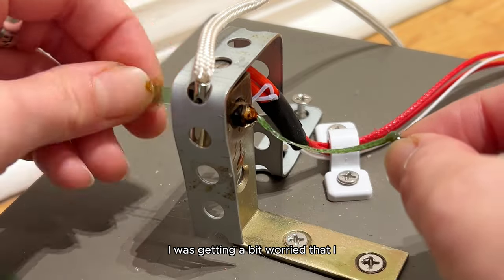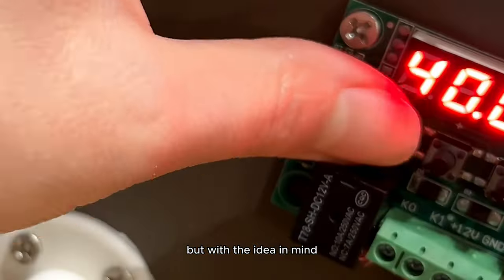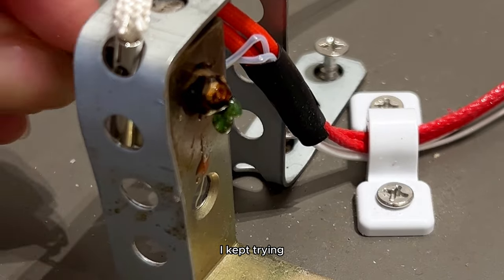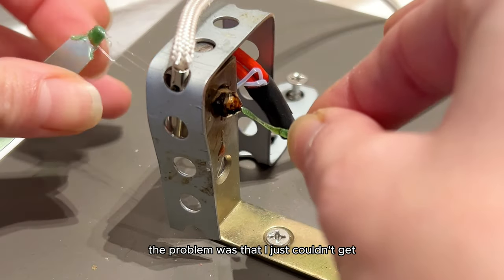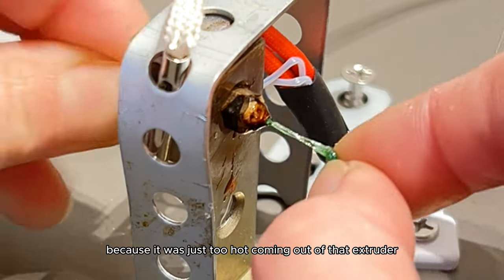I was getting a bit worried that I was never going to figure out how to melt the strips, but I kept trying. The problem was that I just couldn't get the filament to wrap around my mechanical pulley because it was just too hot coming out of that extruder.